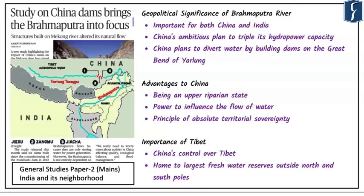Page number 14 of today's newspaper brings forth an important topic from the perspective of China and India. It talks about a study on China's dam bringing the Brahmaputra into focus. This topic is important from the perspective of General Studies Paper 2 Mains.